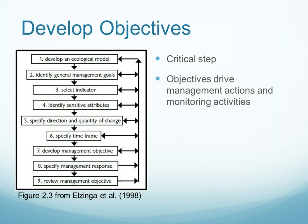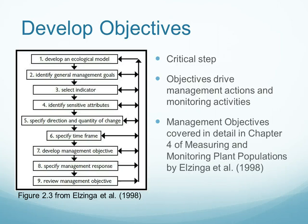The next step is to develop management objectives, and this is a very critical step, because our objectives drive our management actions as well as monitoring activities. The development of management objectives is covered in detail in Chapter 4 of Measuring and Monitoring Plant Populations by Elzinga et al., but we are going to look at each of the steps involved in developing management objectives right now.